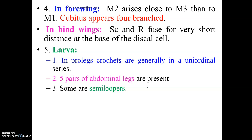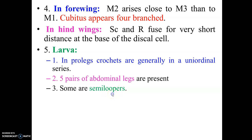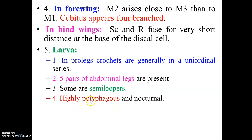Five pairs of abdominal appendages are present. Some of the larvae are semiloopers, meaning some of the prolegs are absent. These insects are highly polyphagous, meaning they can feed on different types of hosts belonging to different families.